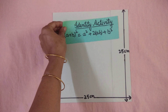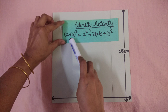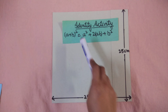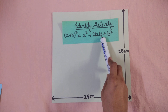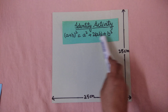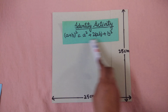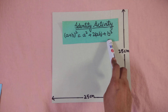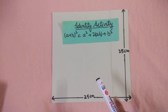The activity is: the identity (a + b) whole square equals a squared plus 2 times a times b plus b squared. This is one of the identities which you are going to use in the chapter. But before we take the chapter further, we will do the activity.